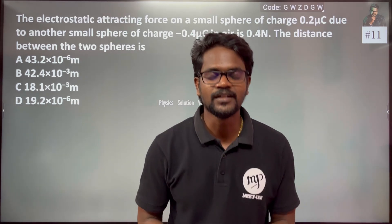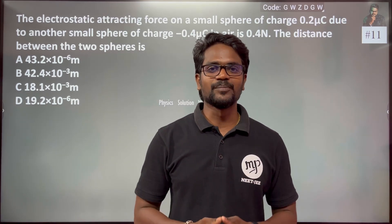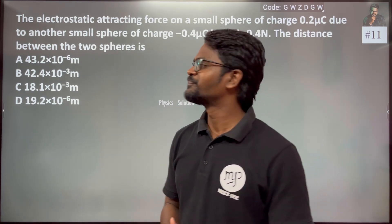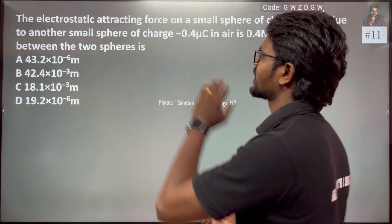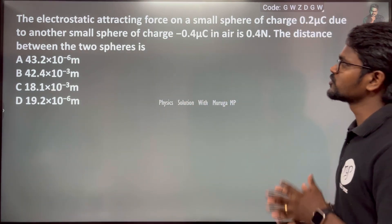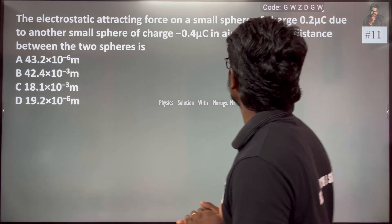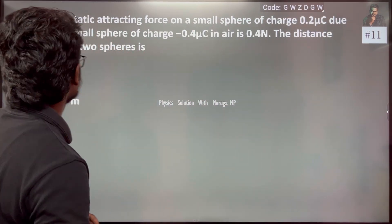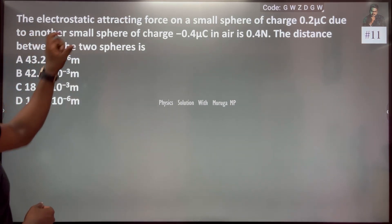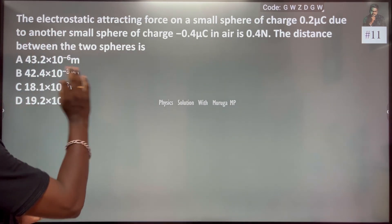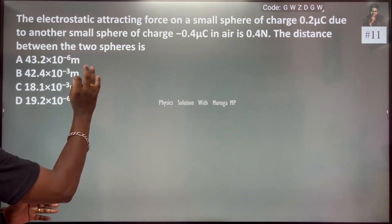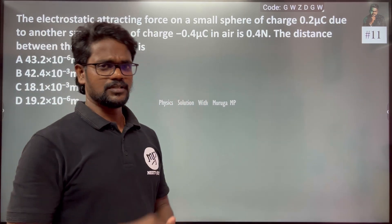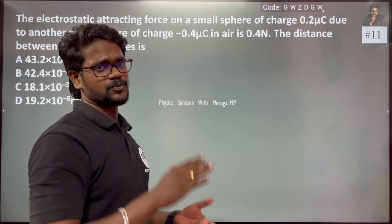Hi everyone, this is the 11th question. It's very simple. The electrostatic attracting force on a small sphere of charge 0.2 microcoulomb due to another small sphere of charge minus 0.4 microcoulomb in air, relative permittivity 1.